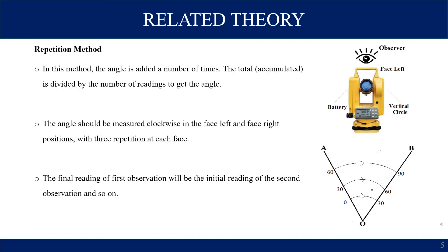Related theory includes the repetition method. In this method the angle is added a number of times. The total accumulated value is divided by the number of readings to get the angle. The angle should be measured clockwise in the face left and face right position with three repetitions at each phase. The final reading of the first observation will be the initial reading of the second observation and so on.